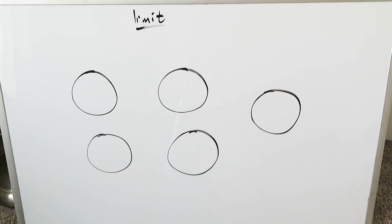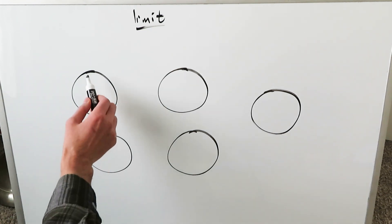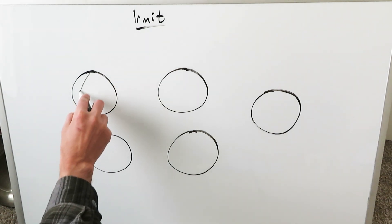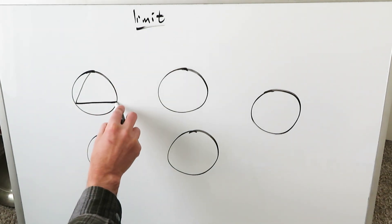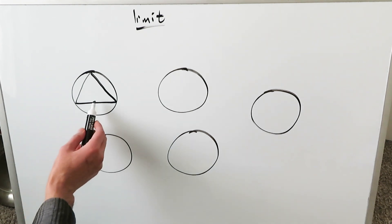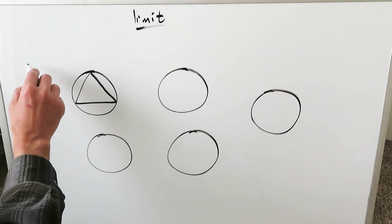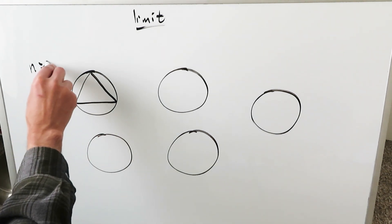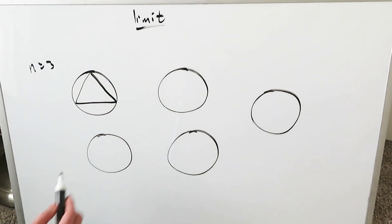If you are thinking about inscribed polygons within circles, let's start here with an equilateral triangle. The condition here is that all the inscribed polygons I'll draw must have equal sides. Here we have n sides, so we have n equals 3 — we have 3 equal sides.